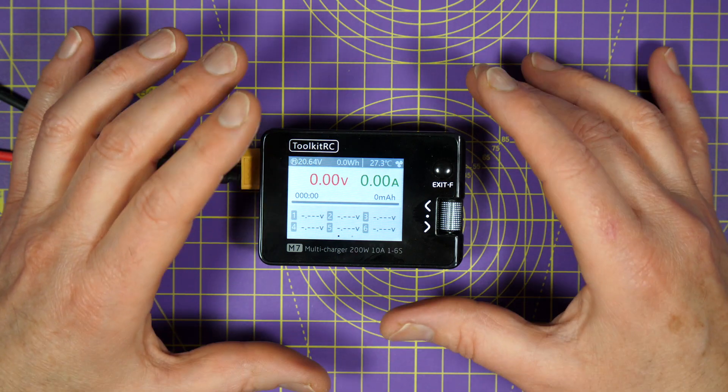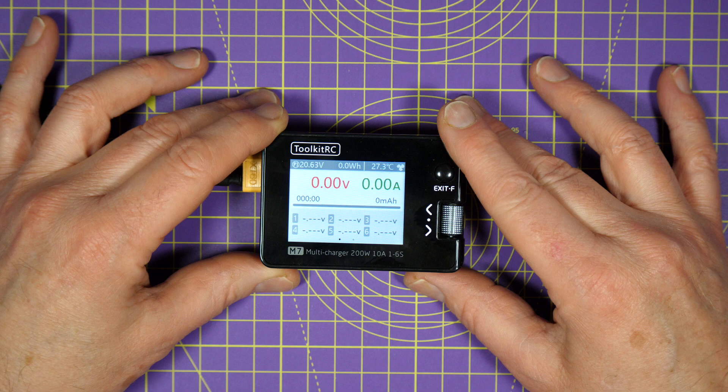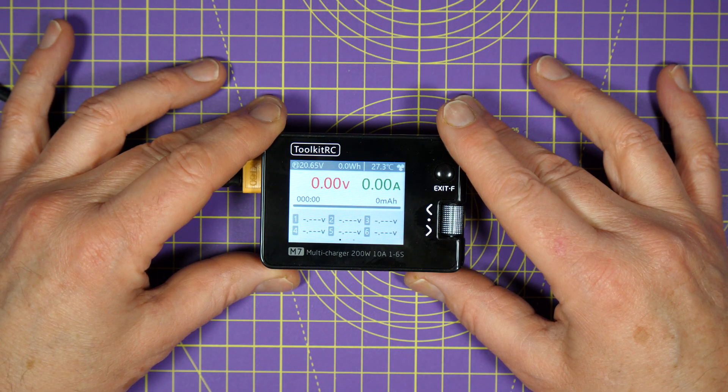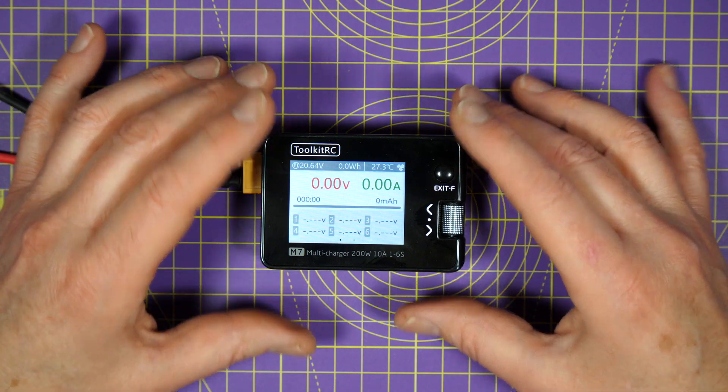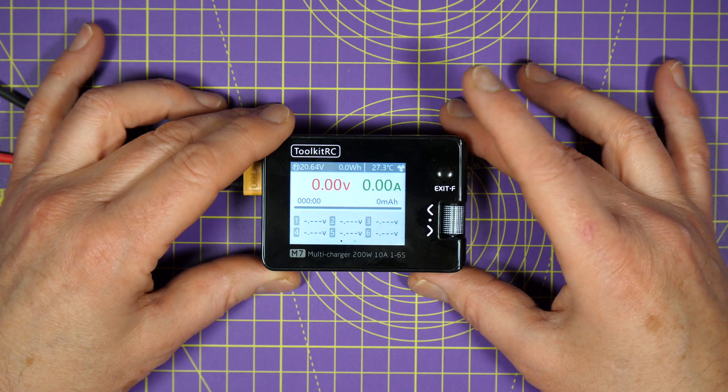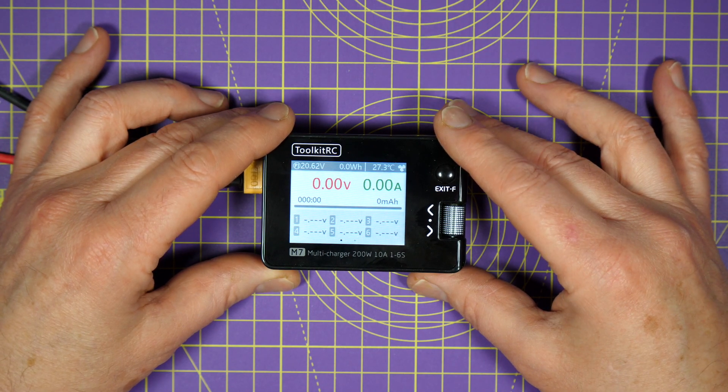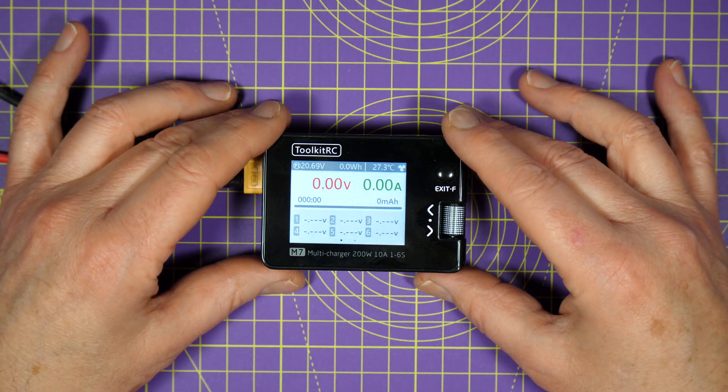Toolkit RC are busy developing new products and now they've just released this M7 multifunction balance charger. It's a direct successor to the M6 at around the same price, size, and the same features. But it's a 200 watt, 10 amp charger, which is 33% more than the M6 could deliver.